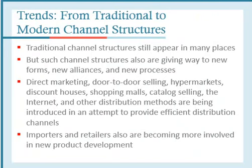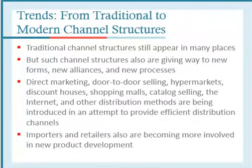Importers and retailers are also becoming more involved in new product development. Examples of modern channel structures include large hypermarkets like Carrefour in Egypt, and stores like Tesco in Britain are moving retail banking into their stores. With online retailers like eBay, Priceline, and Amazon, distribution channels have become shorter and faster. Walmart has expanded all over the world, and stores like Costa are moving into Europe because of the high margins.